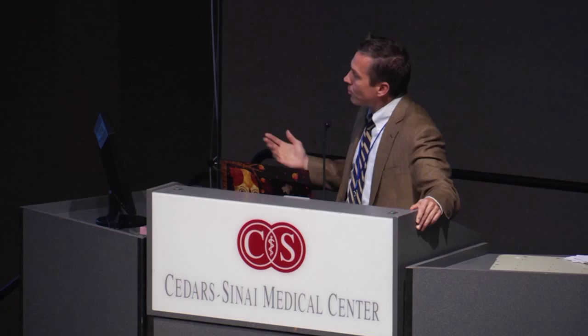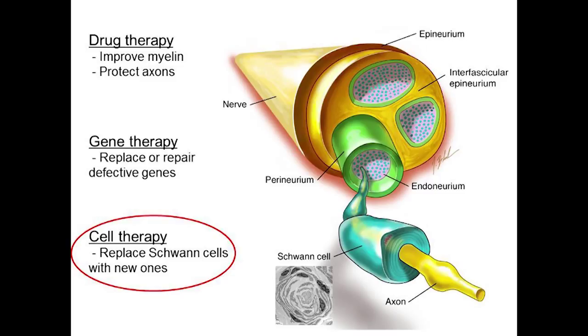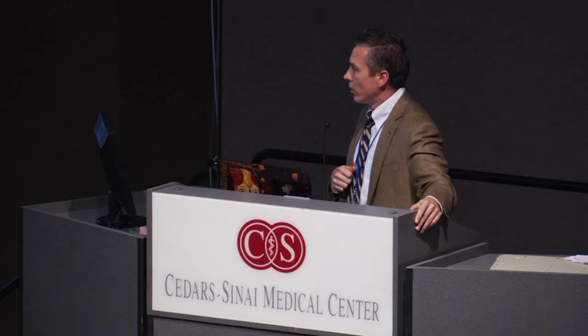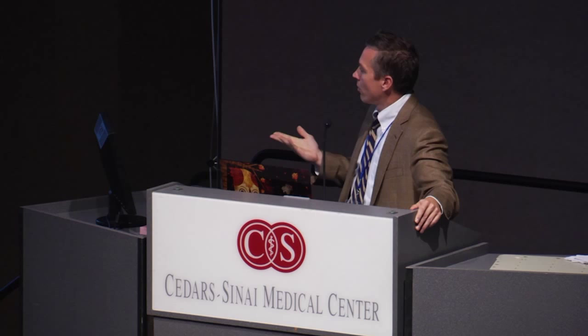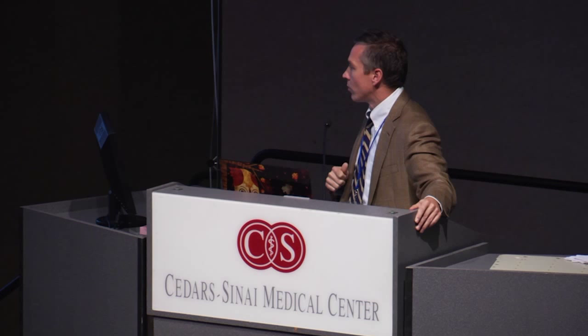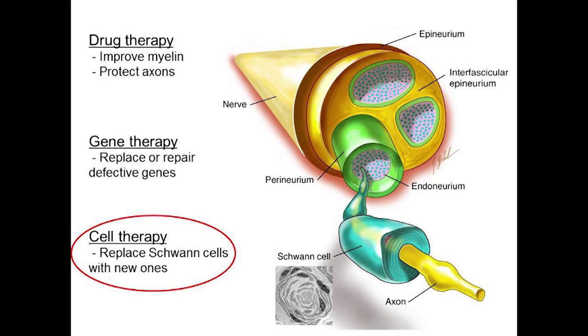Other options include gene therapy — if we figure out what your gene is, we might be able to turn it down or up to fix the problem. And then there's cell therapy, which is really under-investigated in this disease and most diseases. This is stem cell therapy where we're actually injecting a cell or using a cell to deliver something — the concept being that we could replace Schwann cells with new ones, or even replace the axons, which would be an even bigger challenge.